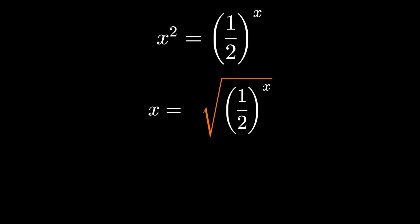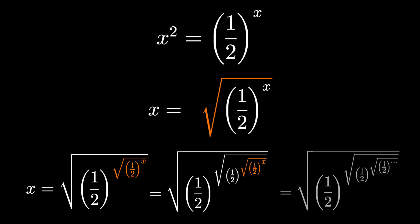Since our equation is x equals the square root of 1 half to the x, we know what x is, and we can place x in for x on the right-hand side. And we could do that again, and again, forever and ever, building this infinite, iterated tower.